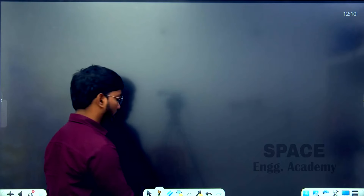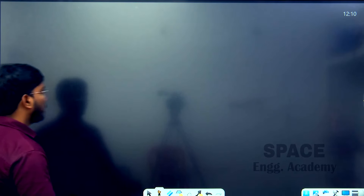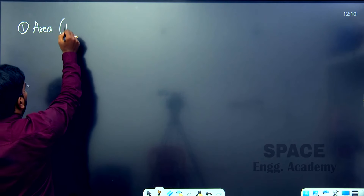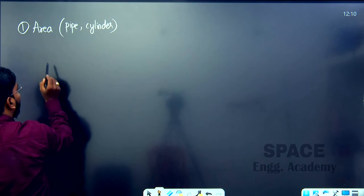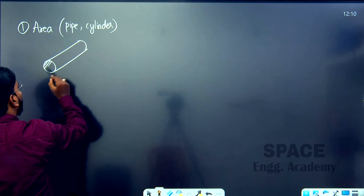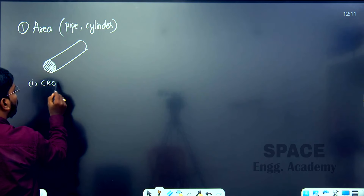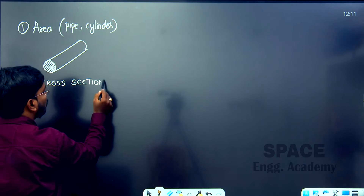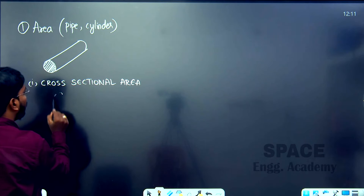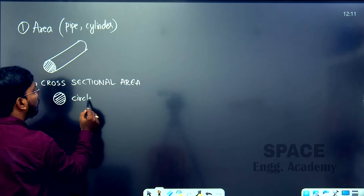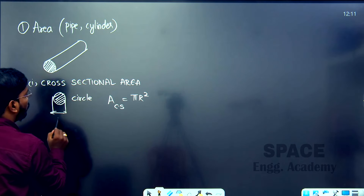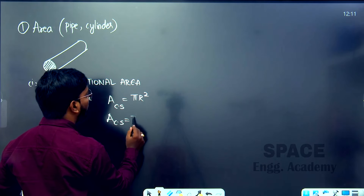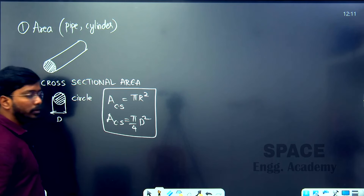Let us get started with each property in detail, starting with area. The first property is area. We discuss area in the context of a pipe or cylinder. The first area that comes to mind is the cross-sectional area. For a cylinder the cross-section is a circle, and the formula for the area of a circle is pi·r², or in terms of diameter: (π/4)·d². This is the first formula.